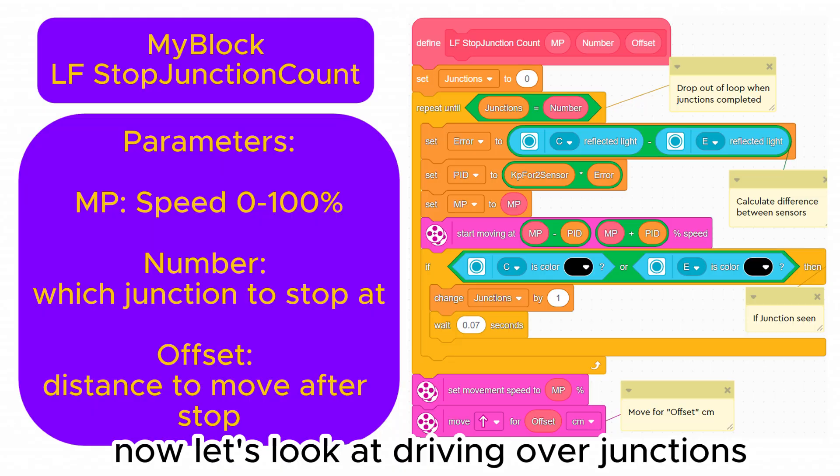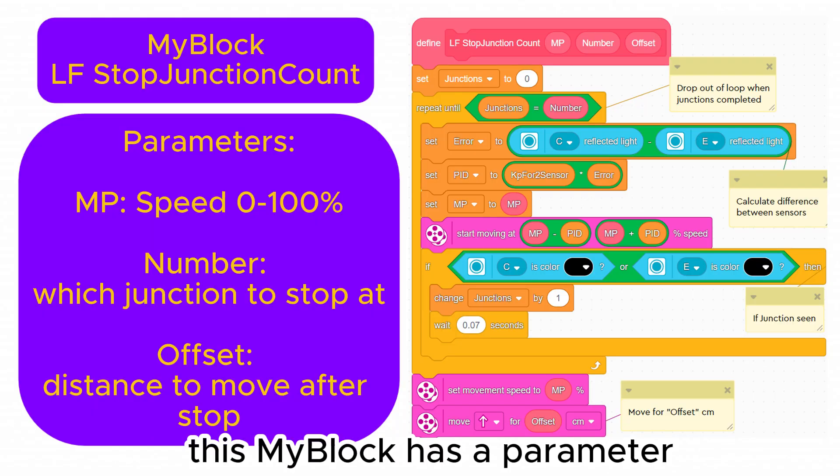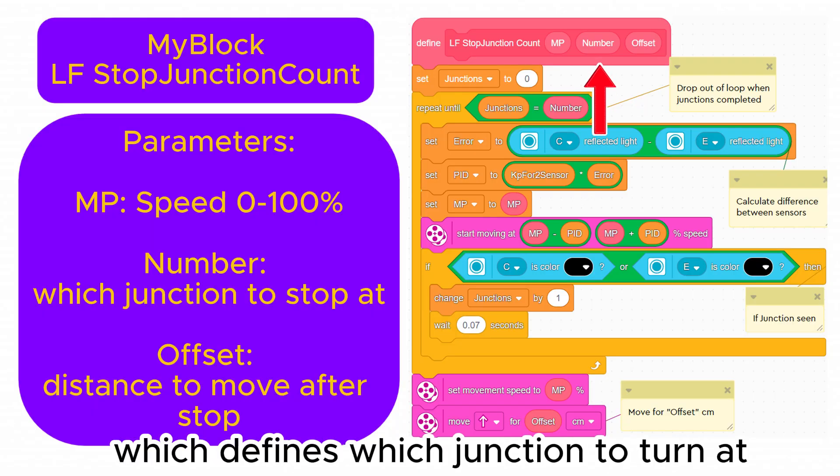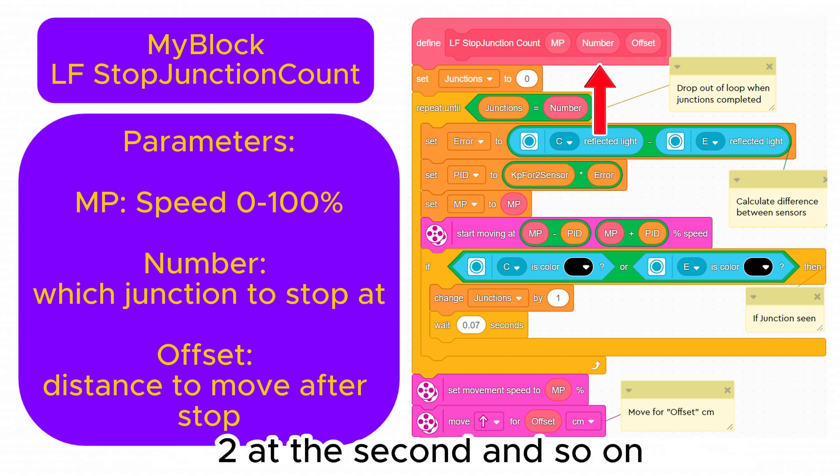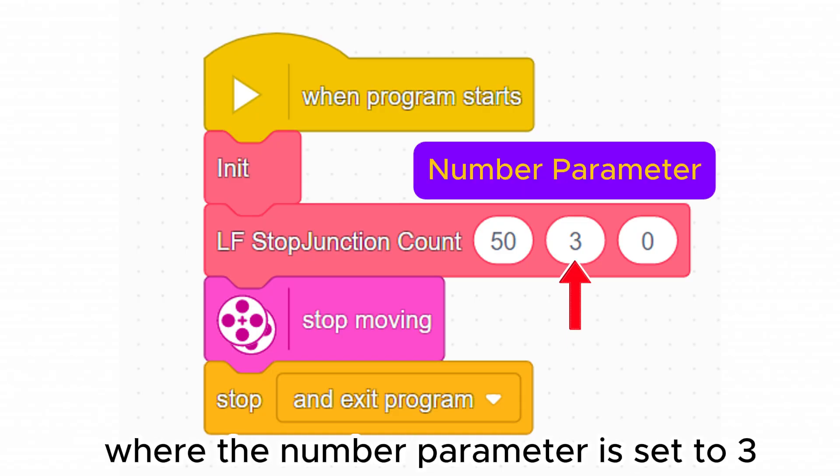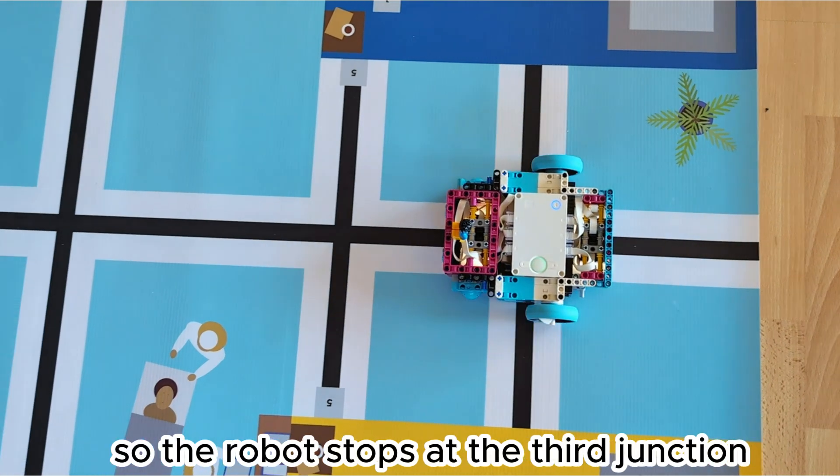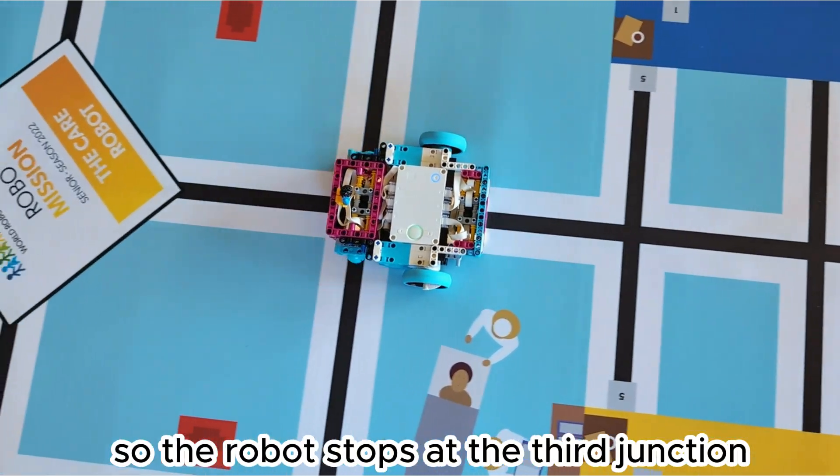Now let's look at driving over junctions. This my block has a parameter which defines which junction to turn at. A value of one will turn at the first junction, two at the second and so on. Here I have made a short program where the number parameter is set to three so the robot stops at the third junction.